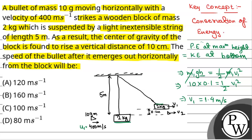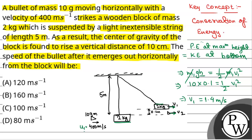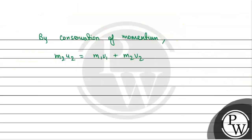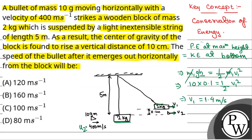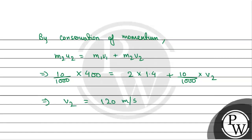Initially the wooden block was at rest. Finally it had velocity V1 and the bullet had velocity V2. So we have M2 times U2, where M2 is the mass of the bullet which is 10 grams, that is 10 by 1000 kg, and U2 is 400 meter per second. That equals M1 times V1, which is 2 times 1.4, plus M2 times V2, which is 10 by 1000 times V2. Solving for V2 gives V2 equal to 120 meter per second.